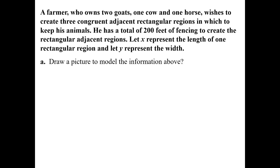Unit 5 Bird Problems. A farmer who owns two goats, one cow, and one horse wishes to create three congruent adjacent rectangular regions in which to keep his animals. He has a total of 200 feet of fencing. Let X represent the length of one rectangular region and let Y represent the width. The first thing I want you to do is draw a picture that models the information above.